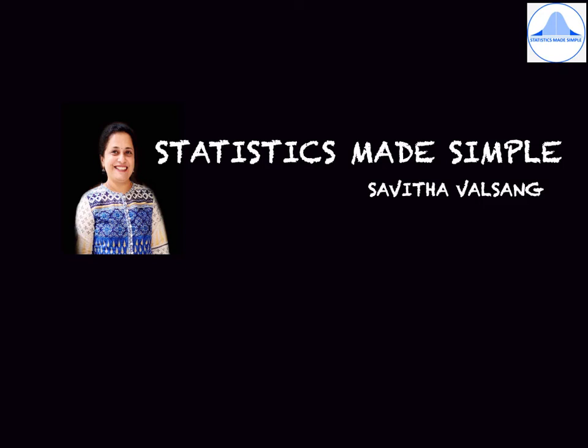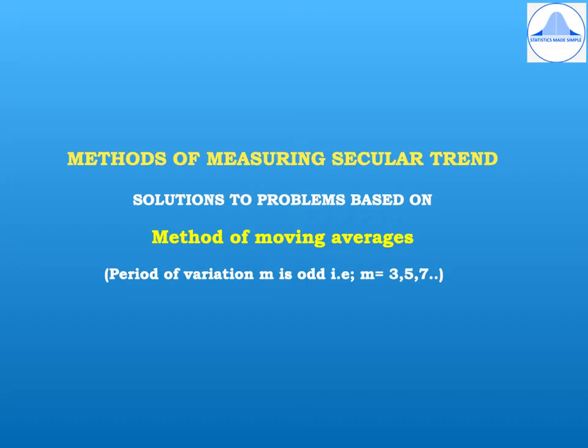Welcome to Statistics Made Simple. I am Savita Valsan. In this video, we will learn the third method of measuring secular trend, that is the method of moving averages, and we will also find solutions to problems based on it where the period of variation m is odd, that is m takes the values 3, 5, 7, and so on.